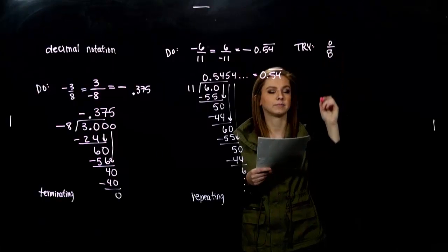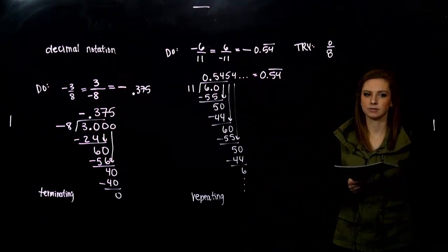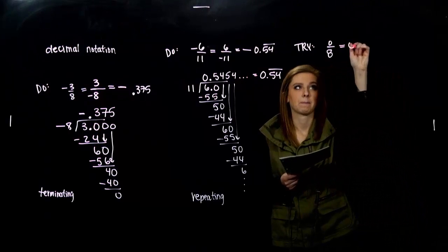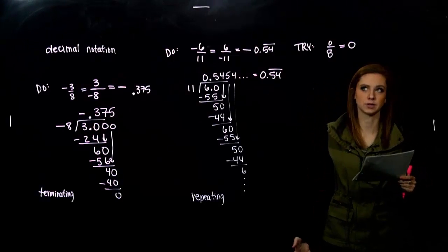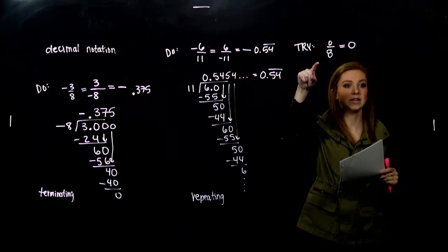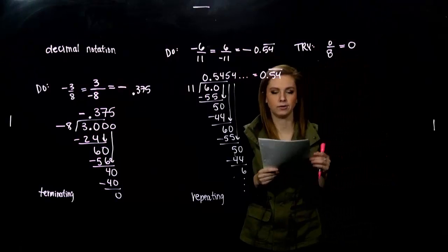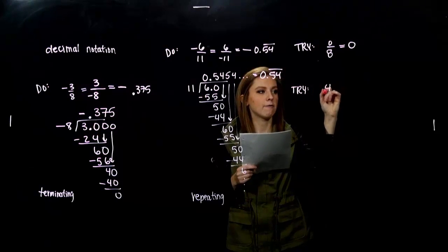What did you get? Zero divided by anything is always zero. Positive, negative, anything except for zero. Zero divided by zero is not defined, but we'll talk about that later. So, zero divided by any number other than zero always turns out to be zero. I like that one. That was easy.